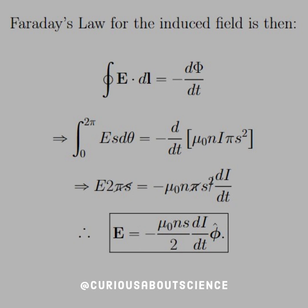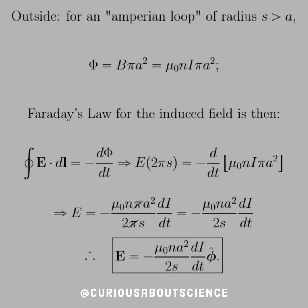Now we use this in Faraday's law for the induced field. The Amperian loop is a circular loop, so E dot dL gives us E times the circumference — DL is only changing in the theta direction — and we get two pi S. The only thing changing with respect to time on the flux side is the current, so d by dt gets attributed to the current only. The pi S terms cancel on both sides, and the induced electric field inside is negative mu-naught n S over 2 times dI/dt in the phi-hat direction — the negative sign is Lenz's law restoring the flux.